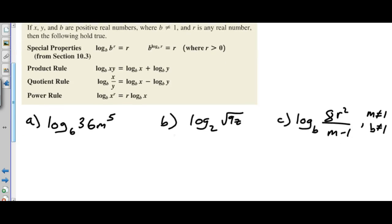First we have log base 6 of 36m to the power of 5. I'm going to first apply the product rule and write this as log base 6 of 36 plus log base 6 of m to the power 5.